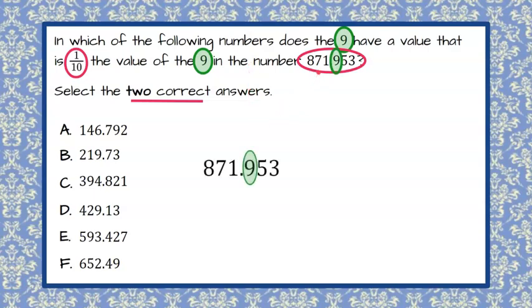So the first thing I want to do is bring down the number that we have here, the 871 decimal point 953. We're being asked to identify information about the digit that is the 9. So here it is, we are asked to find one-tenth the value of this 9, which is in the tenths column or digit.